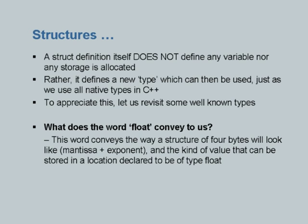The struct itself does not define any variable, nor is any storage allocated. When you say struct something, you are actually defining a new type — no storage is allocated because no variable or array is defined. This new type can be used just as we use int, float, or char in C++.